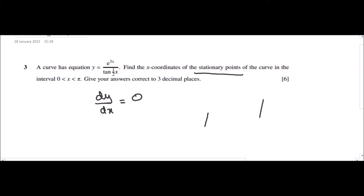To find dy/dx, our function is given. Basically we have two functions and as they are being divided, we will be using the quotient rule. So first I will write the formula of the quotient rule: dy/dx equals v·u′ minus u·v′ all over v².